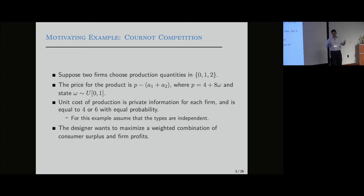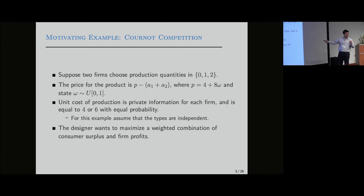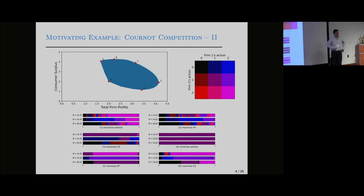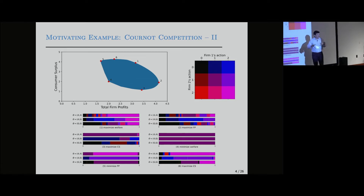The question is: what type of mechanisms are optimal, and are there structural properties of such mechanisms? A is the actions — the production quantities A1 and A2 of the two firms. This quantity is the total supply. The larger the supply in the market, the lower the price. This is a slide with almost no words but a lot going on, so I'll start with this picture and try to break it down.